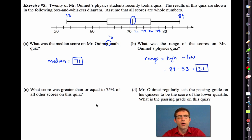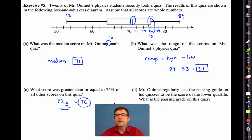Now, letter C was probably the most confusing of them all. What score was greater than or equal to 75% of all other scores on this quiz? Well, that's the third quartile. All right. The third quartile value sits at that 75% mark. And that's right here. That's a 76. Again, it's a physics quiz. It's tough. Letter D. Mr. WeMet regularly sets the passing grade on his quizzes to be the score of the lower quartile, the first quartile. What is the passing grade on this quiz? Well, that's going to be this one right here. And that is a 64.